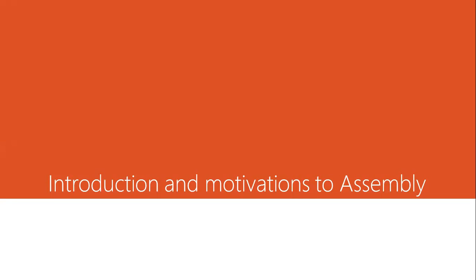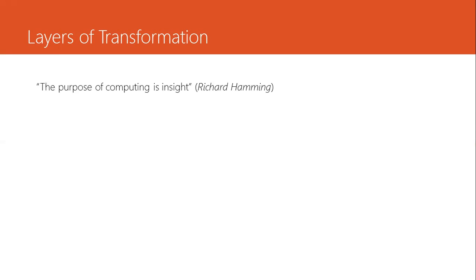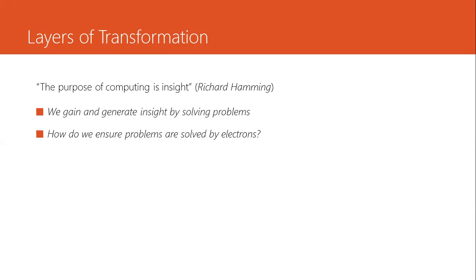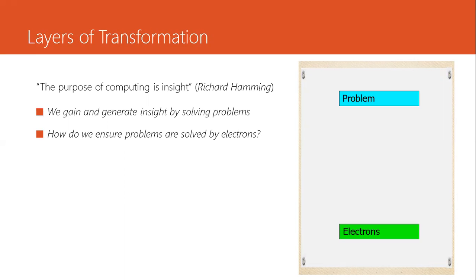In this lecture we go through an introduction to assembly and some motivations into why you should look at the logic from a lower level such as assembly. If you remember, we talked about layers of transformation. As Richard Hamming says, the purpose of computing is insight — you take the problem and you solve it. So how do we ensure problems are solved by electrons? Because the problem cannot be magically solved by electrons, there is a huge gap in between. Therefore the concept of layers of abstraction was introduced by the computer science community, breaking down the computational load into specialized areas so that one only needs to concentrate on their own area.